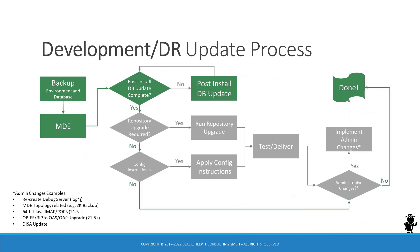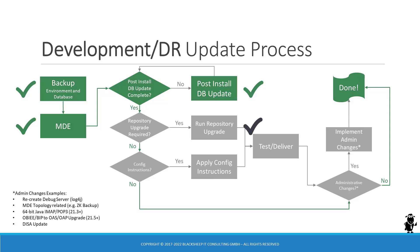The complete update process with all required and optional steps — shown in gray and green respectively — is depicted on the diagram. For development environments, the fast track to a successful update is: take a backup, run the MDE, run the post-installed database update. If you have no repository upgrades, configuration instructions, or administrative changes to implement, you're done. If you need to execute the non-mandatory repository upgrade or apply configuration instructions, you have to do that in the development environment and test and deliver those changes. If you have any administrative changes on your to-do list, you have to implement them as well before declaring success.